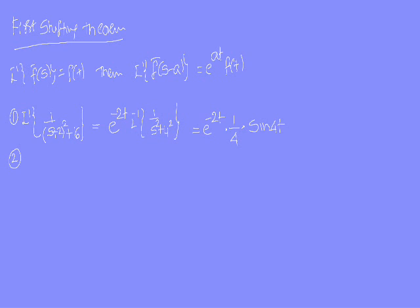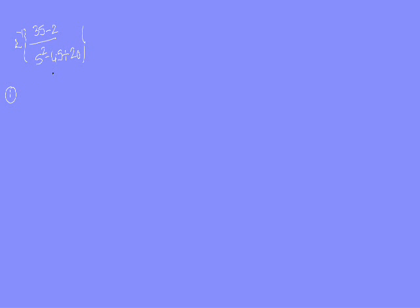Next, Problem 2: find the Laplace inverse of (3s minus 2) by (s² minus 4s plus 20). Here, in place of s we don't directly have s minus 2 or s plus 2, so we must convert this into a First Shifting Theorem model. We take the denominator and complete the square: divide the -4s coefficient by 2, giving coefficient 2, so we write (s minus 2)² plus something. We get L inverse of (3s minus 2) by (s minus 2)².